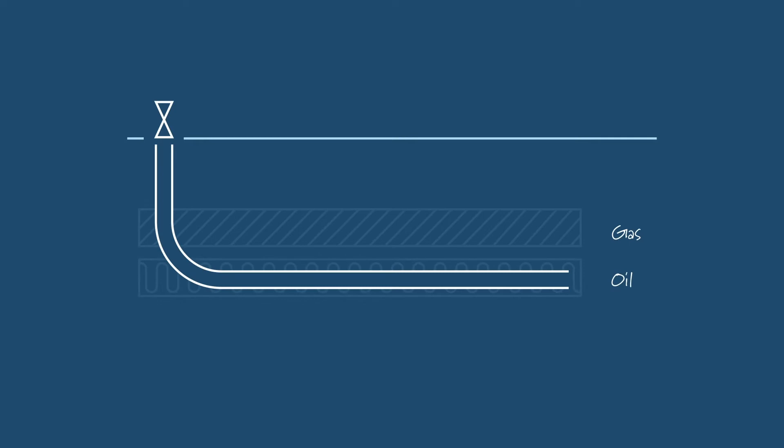A horizontal well will typically start producing more oil at the heel section of the well pipe and wherever there are high permeability zones in the reservoir.